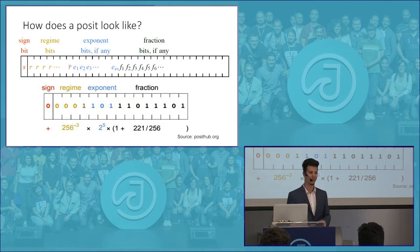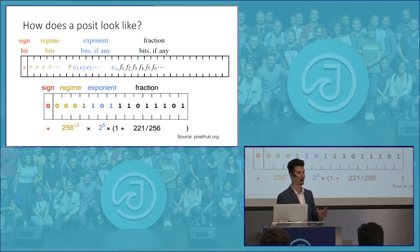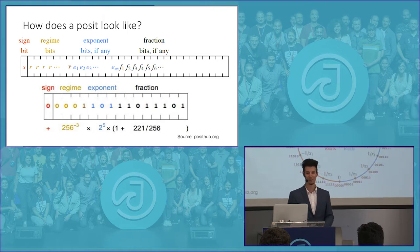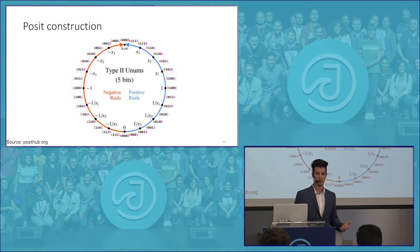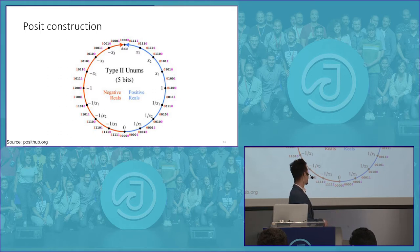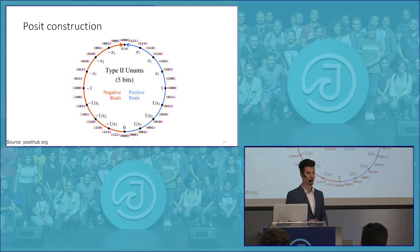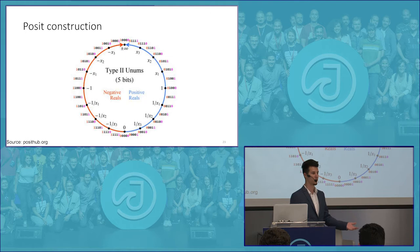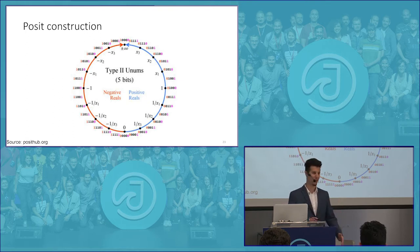This topic deserves its own conference — which actually happened not long ago in Singapore at the Conference for Next Generation Arithmetics. Looking at how a Posit is laid out: negative numbers are on the left, positive on the right, and it wraps around towards positive and negative infinity. A positive property — pun intended — is that there is no separate negative zero, which is a shortcoming of the IEEE standard. There are many more interesting details, but for time's sake, let's move on to why you should use it.